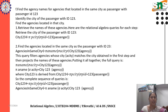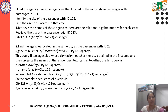Find the agency names for agencies located in the same city as the passenger with passenger ID 123. First, identify the city of the passenger with ID 123, then find the agencies located in the same city.